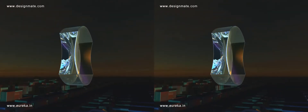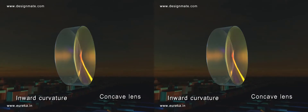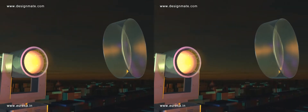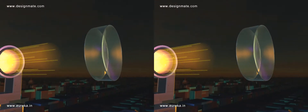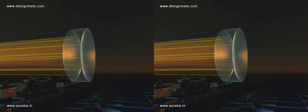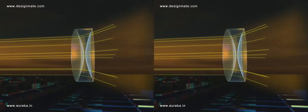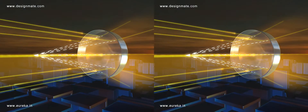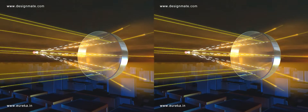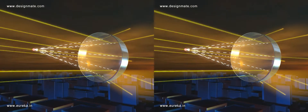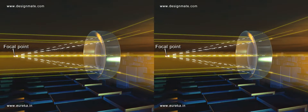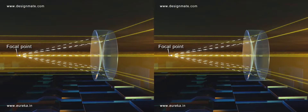A single piece of glass formed in this fashion having inward curvature is called a concave lens. Parallel rays of light incident on the concave lens undergo divergence as they emerge on the other side. If the divergent rays are extended backwards, they appear to meet at one point on the same side of the object. This point is called the focal point of the concave lens.